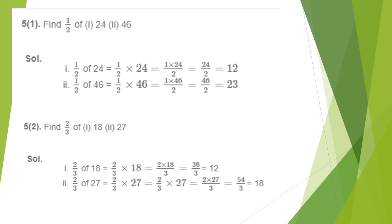Now Question 5, first part: 1/2 of 24. 'Of' means multiplication. In the first step, instead of 'of' we write the multiplication symbol. This is of the form: multiplication of a fraction by a whole number. Applying the rule, multiply the numerator with the whole number, divided by the denominator. So we get 1 × 24 ÷ 2, that is 24 ÷ 2.